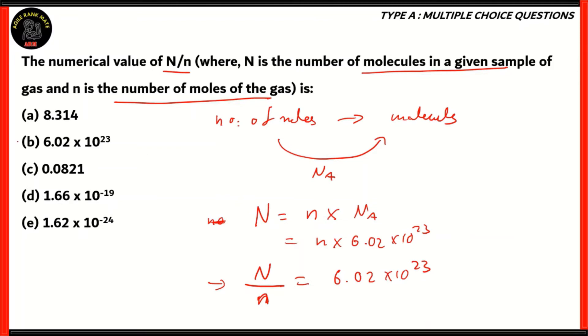Therefore, the correct option in this case is option B, 6.02 into 10 raised to 23. 8.314 is the ideal gas constant. Option C is also the universal gas constant. 1.66 into 10 raised to minus 19 is the universal constant of gravity. 1.62 to 10 raised to minus 24 is a different constant. It's not the numerical value of the number of molecules divided by the number of moles of a specific sample of gas.